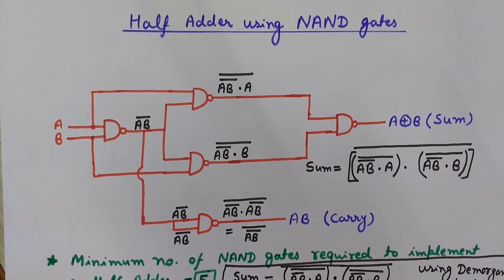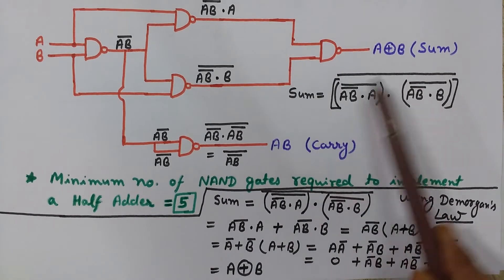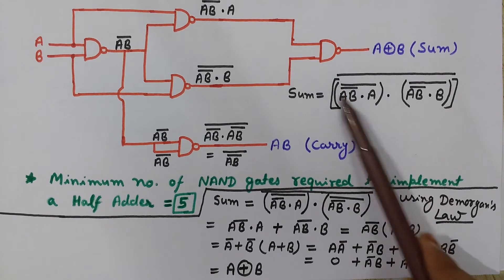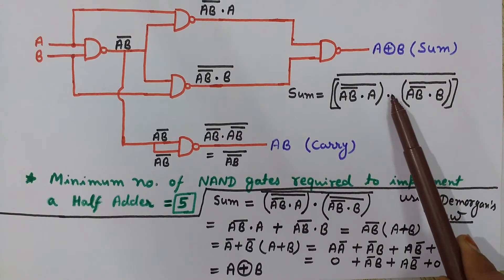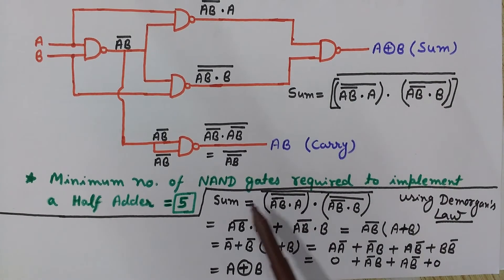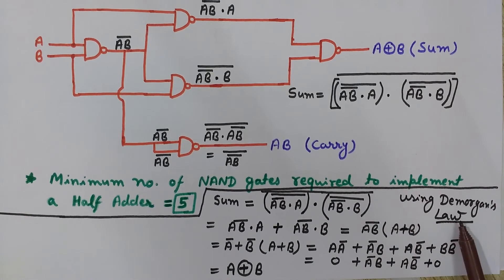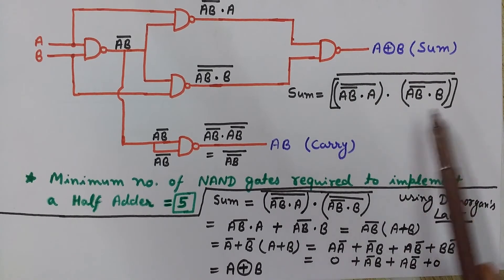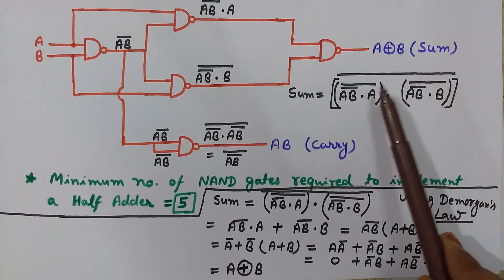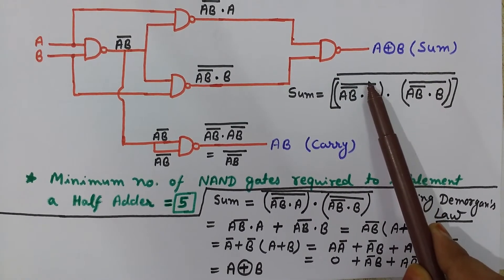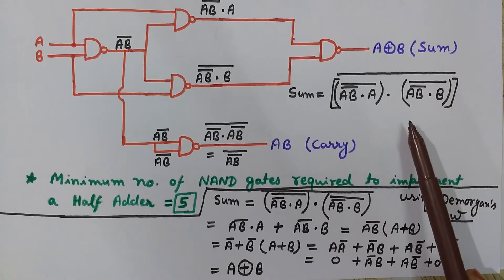Let's see the calculation. We NAND the two terms — (A·B̄ · A)̄ and (A·B̄ · B)̄ — to get A XOR B, which equals Ā·B + A·B̄. The sum is the NAND of these two terms. By applying De Morgan's law, when we complement a Boolean expression, everything gets complemented.